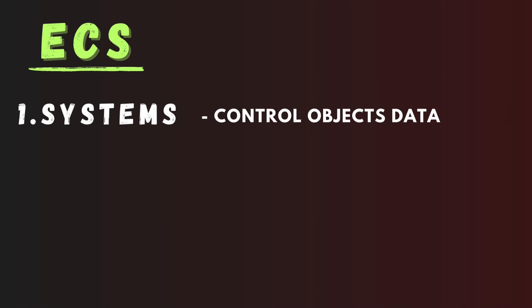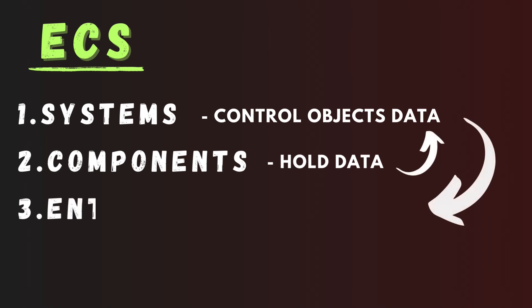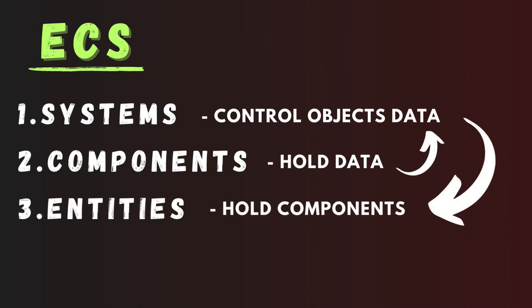The second part are components, which just hold data for the objects that systems should do something with. The third part are entities, which are the same as game objects — they just hold data, and you can put components on them.